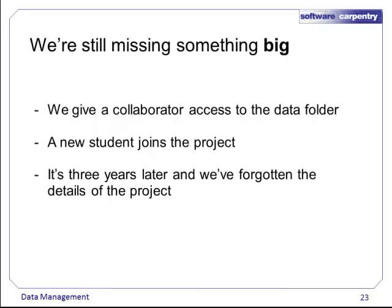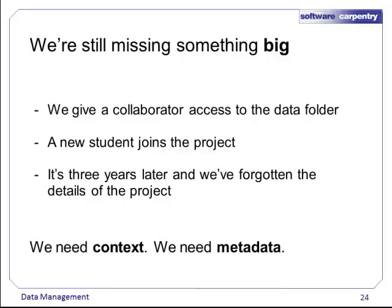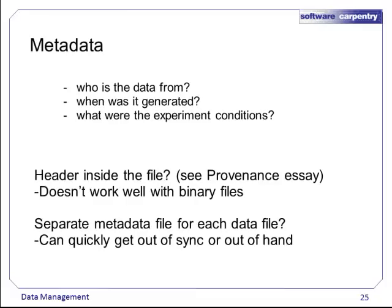But we are missing something critical. What if we give data access to a collaborator? A new student joins the project, or it is three years later and we have forgotten when the various stages of the project happened. We need context, and we usually add it with some metadata. It is even better to have a notebook as well, but it should also be in electronic form. Metadata records who the data is from, when it was generated, what the experimental conditions were, and so on.